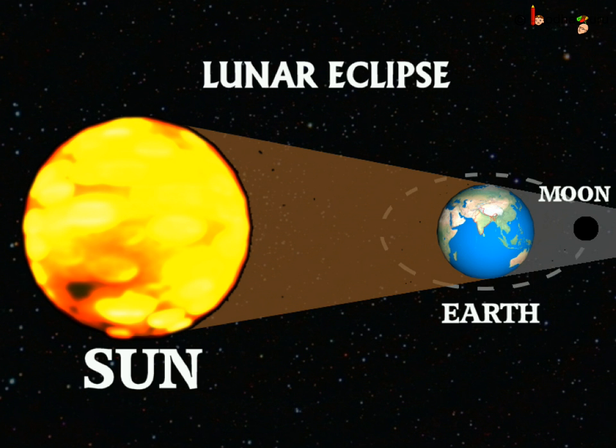Now let us see what happens when the Earth comes in between Sun and the Moon. The Moon is not getting sunlight as Earth is blocking the sunlight and hence the Moon is not visible from the Earth. This is called as Lunar Eclipse and only occurs on the Full Moon day.